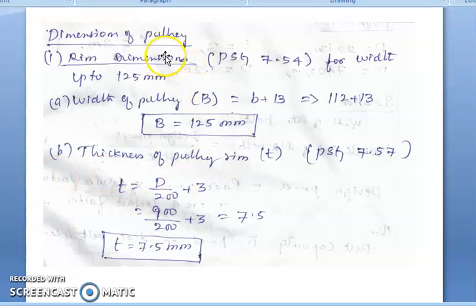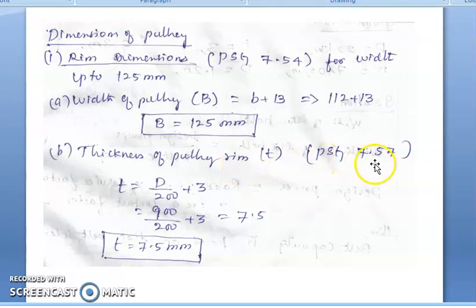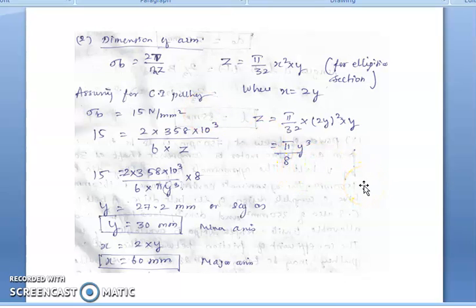For pulley dimensions — rim, arms, and hub. Rim: from page 7.54, for belt width up to 125 mm, pulley width B = belt width + 13 = 125 mm. Rim thickness from page 7.57: t = D/200 + 3 = 7.5 mm for 6 spokes. The arms have an elliptical cross-section with major axis x and minor axis y, where x = 2y.